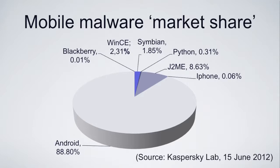Where Apple has the vetting — the walled garden context — that's not the case for Android. Therefore there is more potential for malware to slip through, and demonstrably it's doing so.